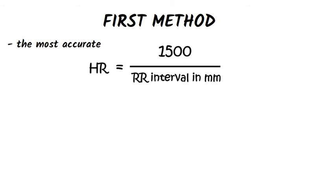The first method is also the most accurate and uses the following formula: heart rate equals 1500 divided by RR interval in millimeters.